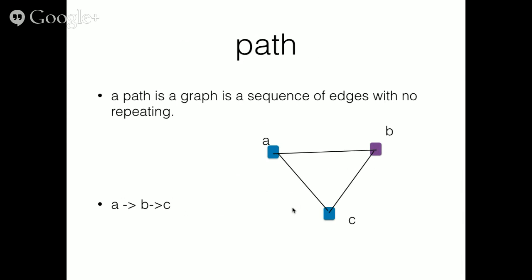And now we define path. A path is a sequence of nodes that shows how we can cross the graph from one node to another one by going through edges and no edges can be repeated. Like here we can go from A to B and to C, and A, B, C is a path between A and C.